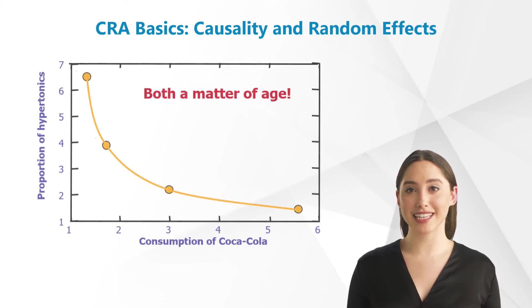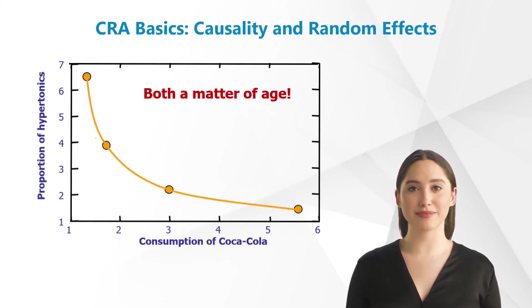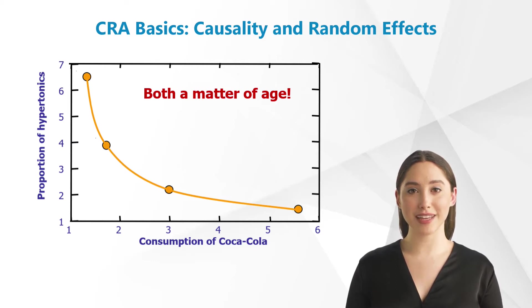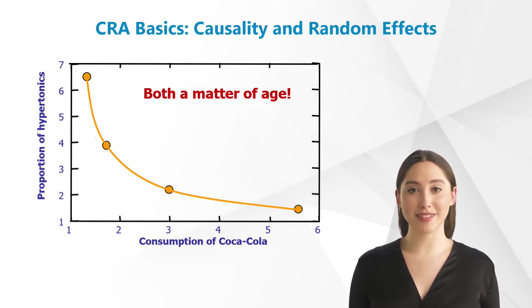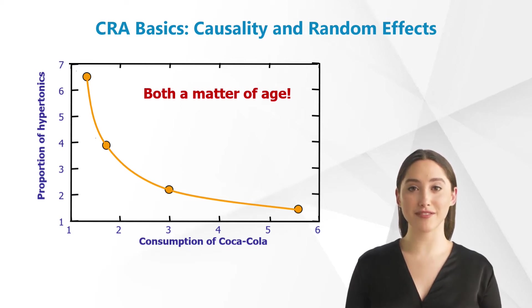Here you see an example of alternative explanations of a study result. In a large American study, the consumption of Coca-Cola and hypertension were examined. In this diagram, the blood pressure is depicted in correlation to the consumption of Coca-Cola. At first sight, one might assume that people who drink a lot of Coca-Cola therefore have normal blood pressure, and vice versa.